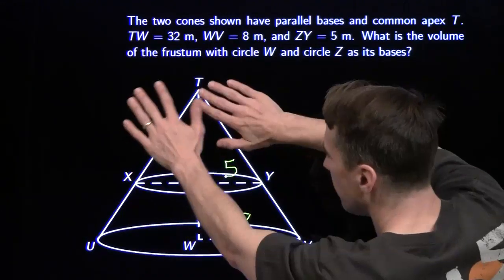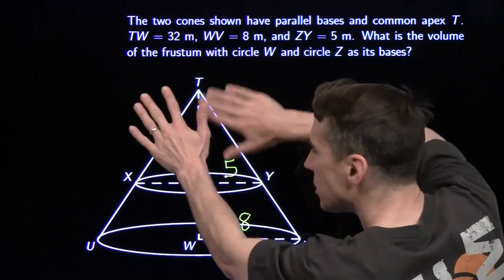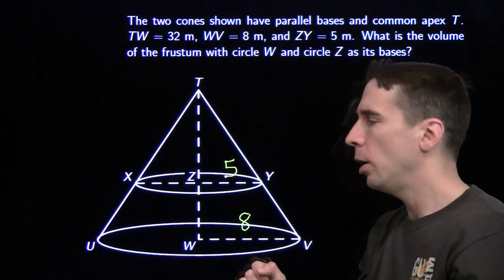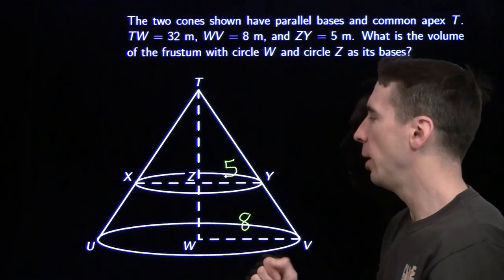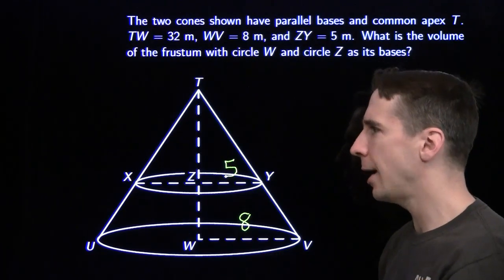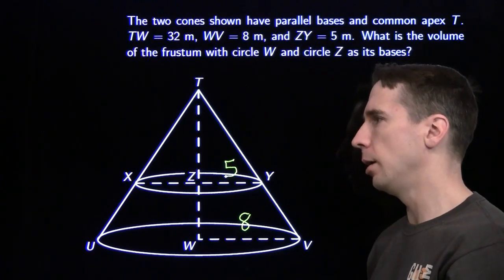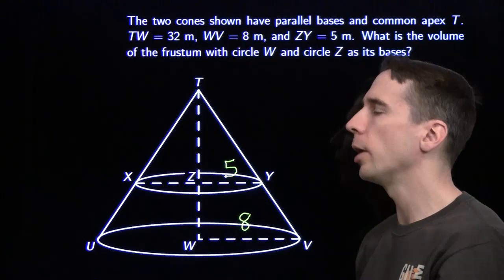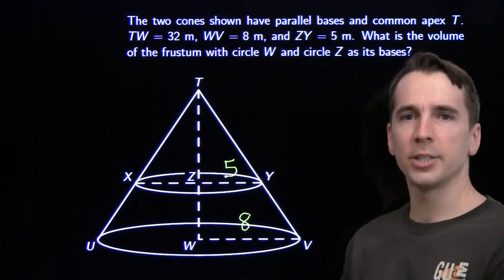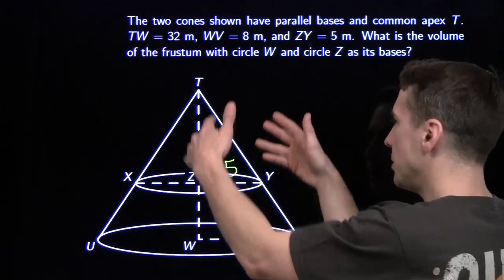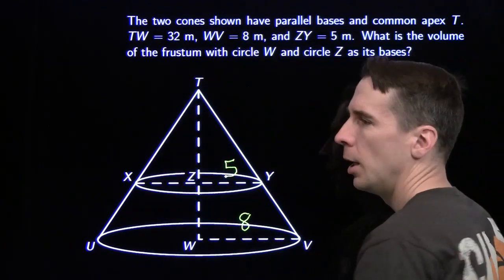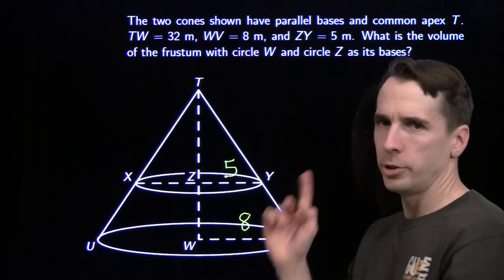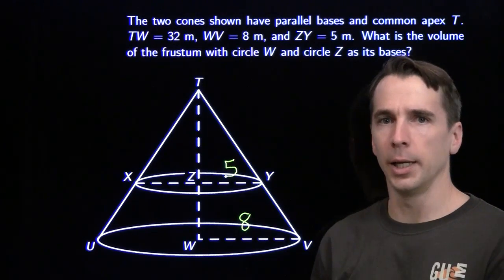Harvey, last year they just gave us the frustum — didn't give us the small cone up here. Right? We had to imagine that. It was there, they just hadn't drawn it in yet. Oh, this guy's impossible. Whenever he sees a frustum, he sees the small cone and the large cone, even if they haven't gotten around to drawing the small cone yet.